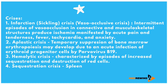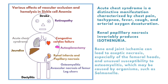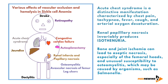The second crisis is aplastic crisis — a temporary suppression of bone marrow erythropoiesis, which may develop due to acute infection of erythroid progenitor cells by Parvovirus B19. Third is hemolytic crisis, characterized by episodes of increased sequestration and destruction of red cells. The last is sequestration crisis of the spleen, where the spleen undergoes shutdown or autosplenectomy. It is important to remember all four of these crises.